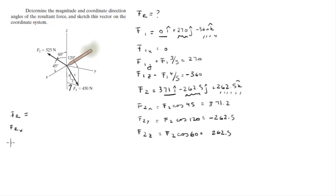So the Fᵣ has an x component, a y component, and a z component. The x is 0 plus 371.2, the y is 270 minus 262.5, and the z is negative 360 plus 262.5. So this is 371.2, this is 7.5, and the z comes out to be negative 97.5. That's 371.2i plus 7.5j minus 97.5k.